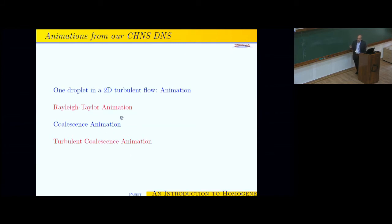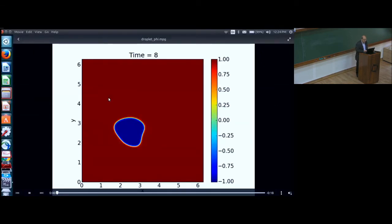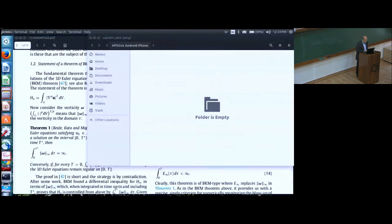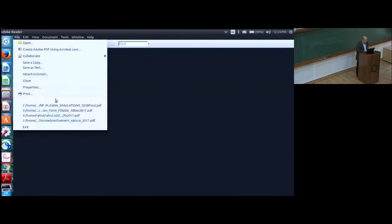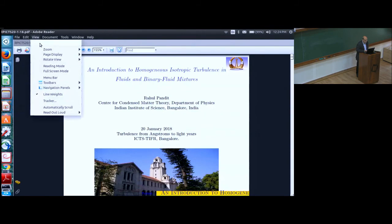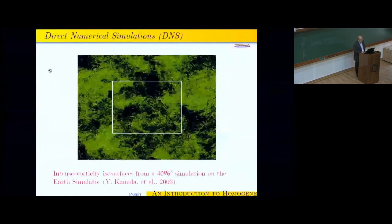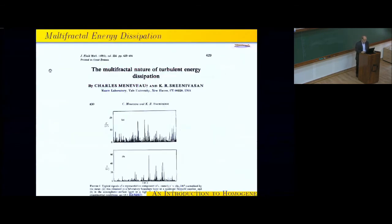So instead of giving you details, let me just show you pictures. By choosing parameters suitably, you can get into a regime where you have one droplet in a turbulent flow. So let me show you what that looks like for the two-dimensional case. That's the droplet. It's fluctuating. The fluctuations are because of turbulence. The amount of A phase and B phase is conserved given the way we have set it up.